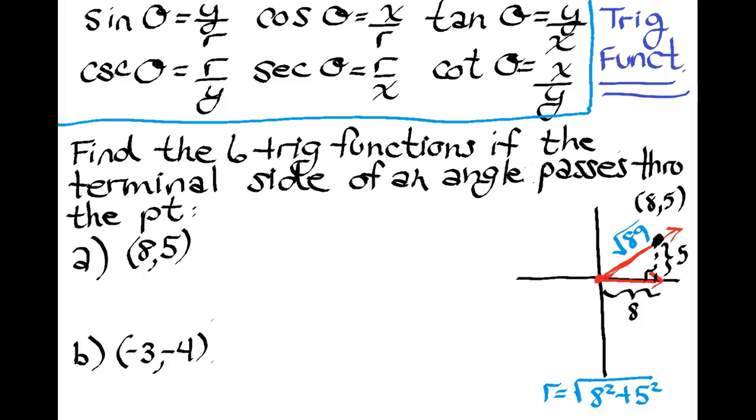So let's go ahead and find the sine, cosine, and tangent first. The sine of our angle theta is going to be y over r. My y portion is 5, r is radical 89. And I can't leave it like that. We're not allowed to have radicals in the denominator. So I rationalize it by multiplying by radical 89 over radical 89. And my sine is going to be 5 radical 89 over 89.